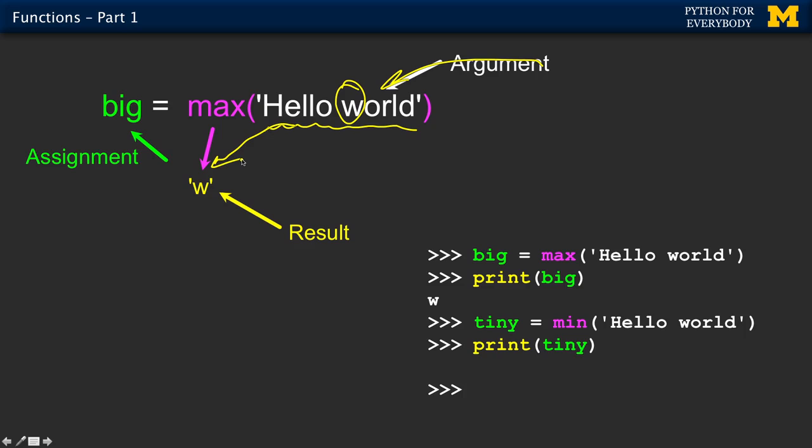So, if we do a min, which is a different function. We pass it in the same hello world, looks for the smallest thing. And for some reason, space is the smallest thing. So this space is what gets sent back to tiny. And there's a space right there, and away we go.